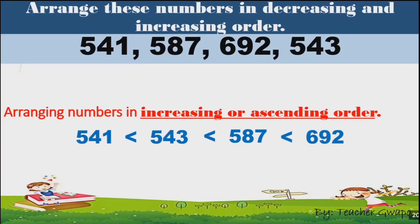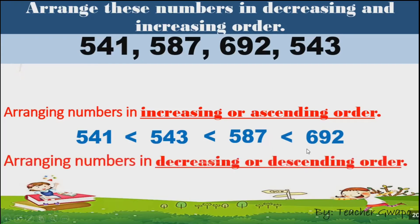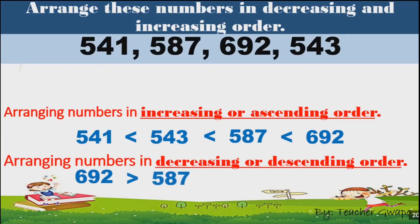Now, if we arrange in decreasing or descending order, it starts from the greatest number. The greatest number here is 692. So 692 is greater than 587, and 587 is greater than 543, and 543 is greater than 541.